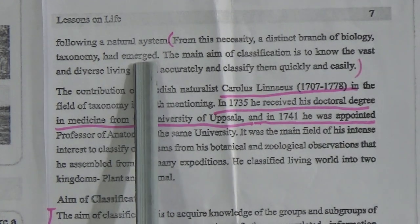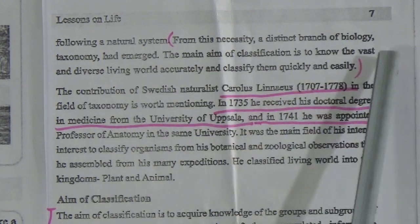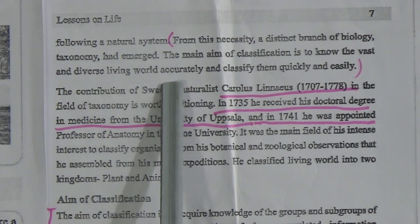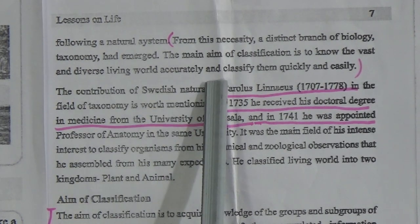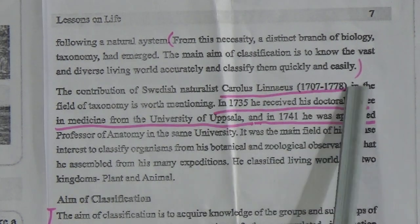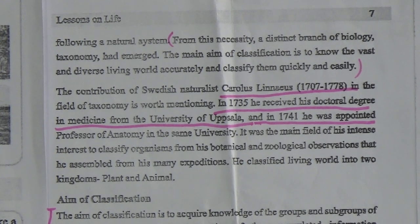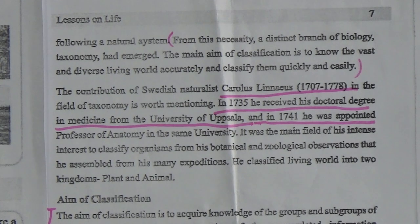The main aim of classification is to know the vast and diverse living world accurately and classify them quickly and easily. Still now, about 4 million different plant species and 30 million animal species have been named and described.